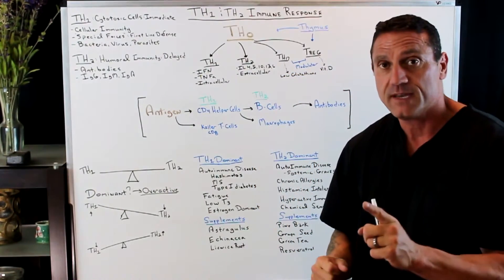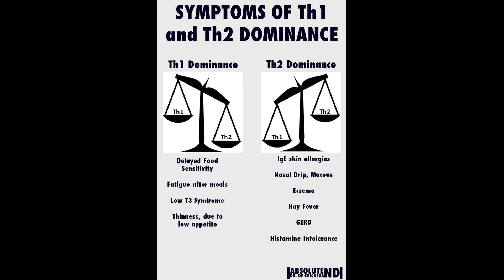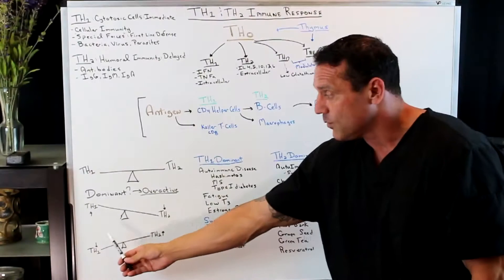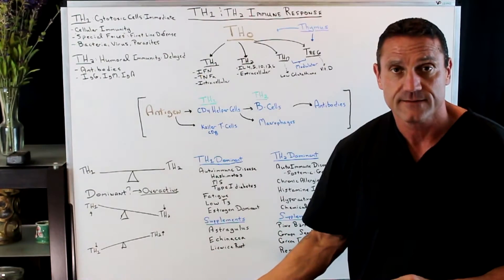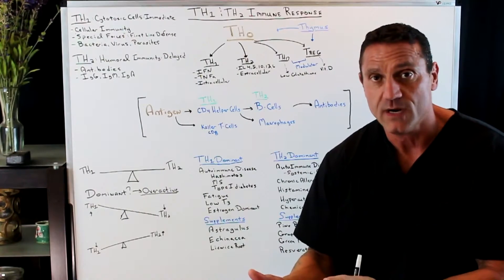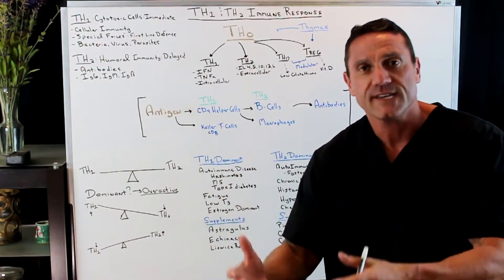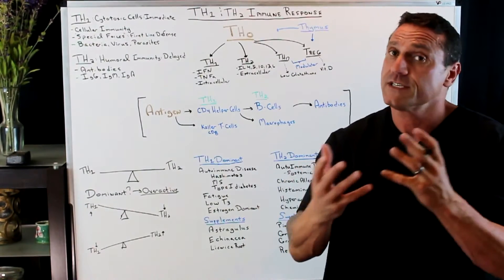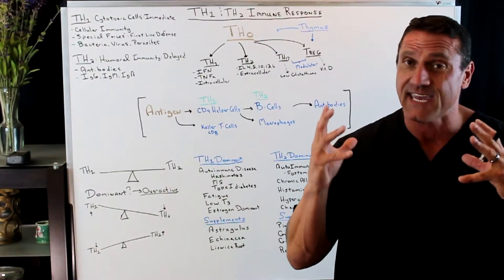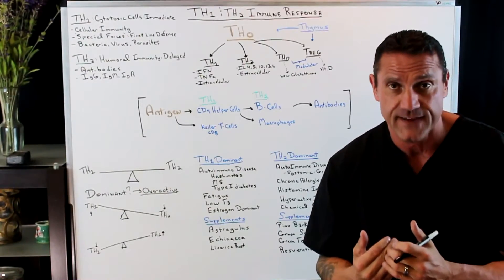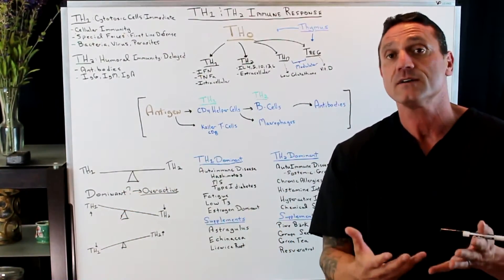This is important because sometimes we are in Th1 dominance or Th2 dominance. When the balance beam is tipped in either direction, whichever is dominant is overactive and the other side is weaker. People who are more Th1 dominant are always getting sick repeatedly. People who are Th2 dominant are chronically sick — they can't get rid of things, whether it's an allergy or an ongoing condition.